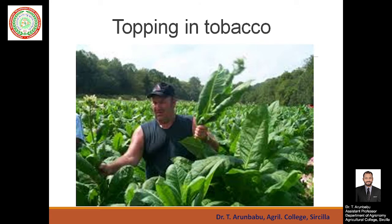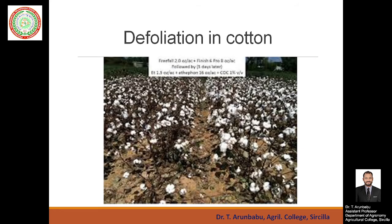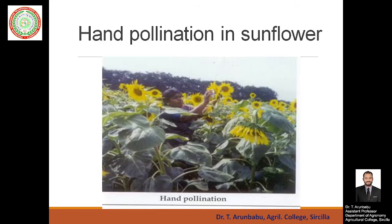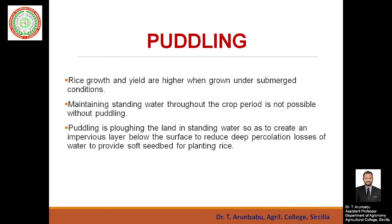Topping in tobacco mainly involves removing the terminal vegetative portions to allow lateral branching. Defoliation in cotton means removal of leaves. Hand pollination in sunflower involves manually rubbing the sunflower head to improve pollination. Next is the important operation of puddling.